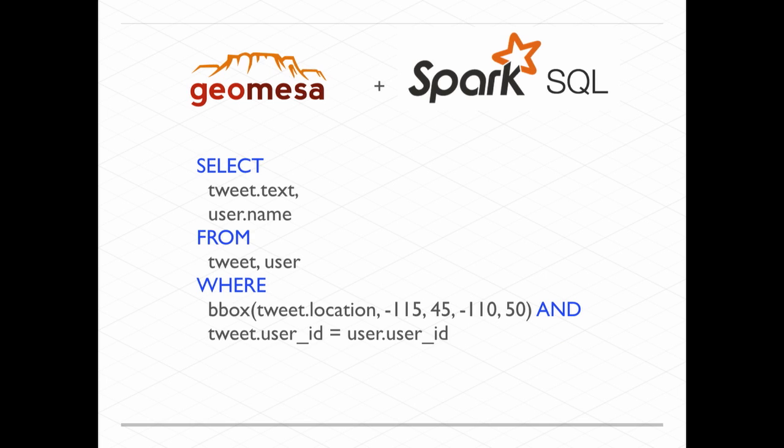Another cool feature of GeoMesa is that it works with Spark SQL — Spark's engine for posting SQL queries to distributed datasets. If you're dealing with large data and want to post SQL queries to it, check out Spark SQL. For a SQL query like selecting tweets where tweet user ID equals user ID, Spark SQL can already handle that. But where GeoMesa comes in is the bounding box — dealing with geospatial location. Without GeoMesa, Spark SQL can't handle that.